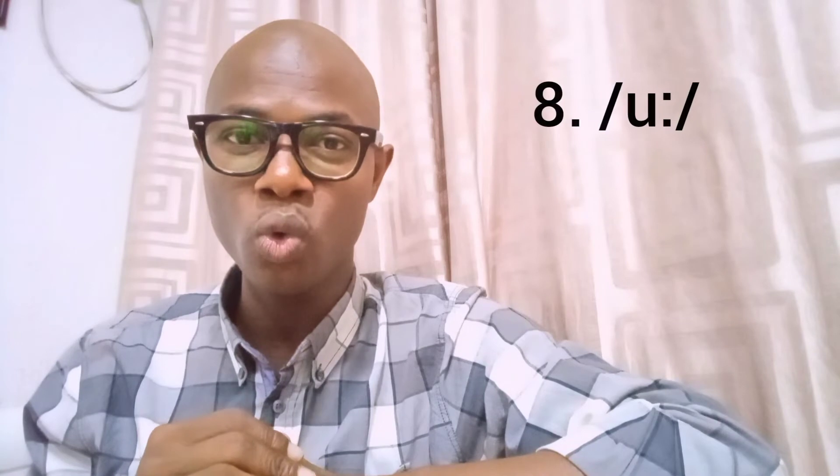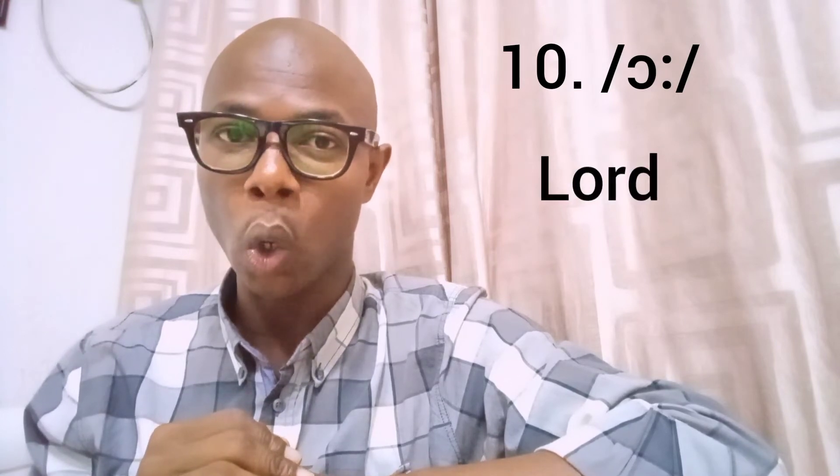Number eight: the OO sound, as in 'food.' Number nine: the short OO sound, as in 'book.' Number ten: the AW sound, as in 'lord.'